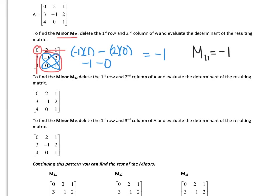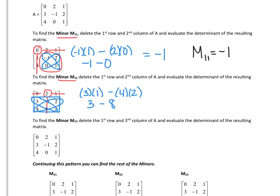To find minor M 1,2, that means first row, second column — which is this position. We delete everything in that row and that column, and find the determinant of the leftover numbers. Taking the first diagonal: 3 times 1 minus 4 times 2. So we get 3 minus 8, which is negative 5. So minor M 1,2 is equal to negative 5.